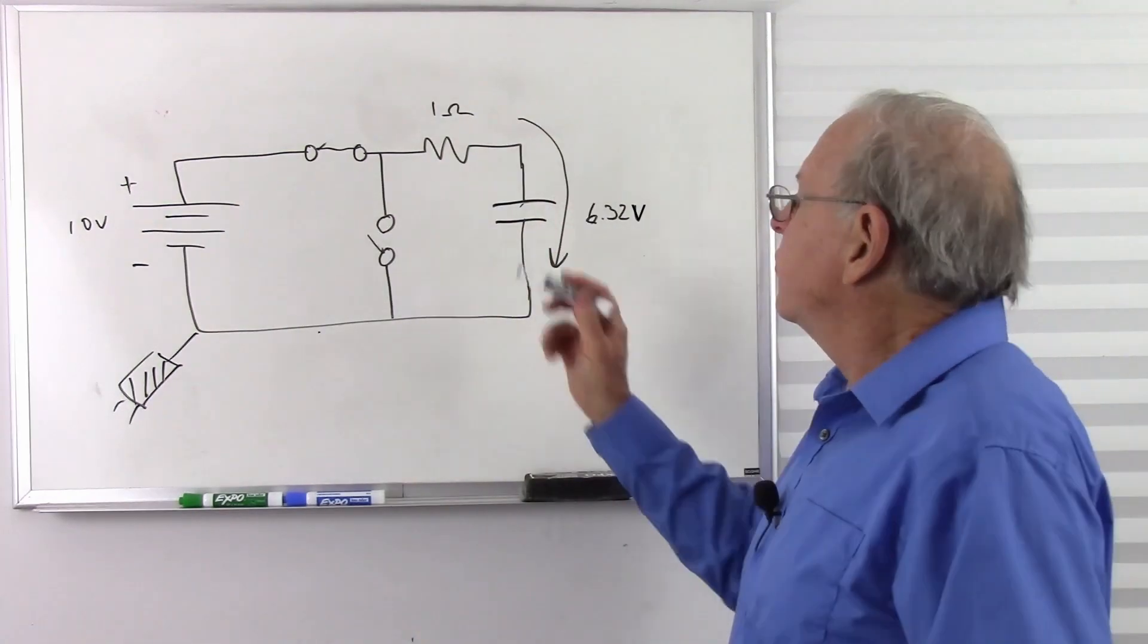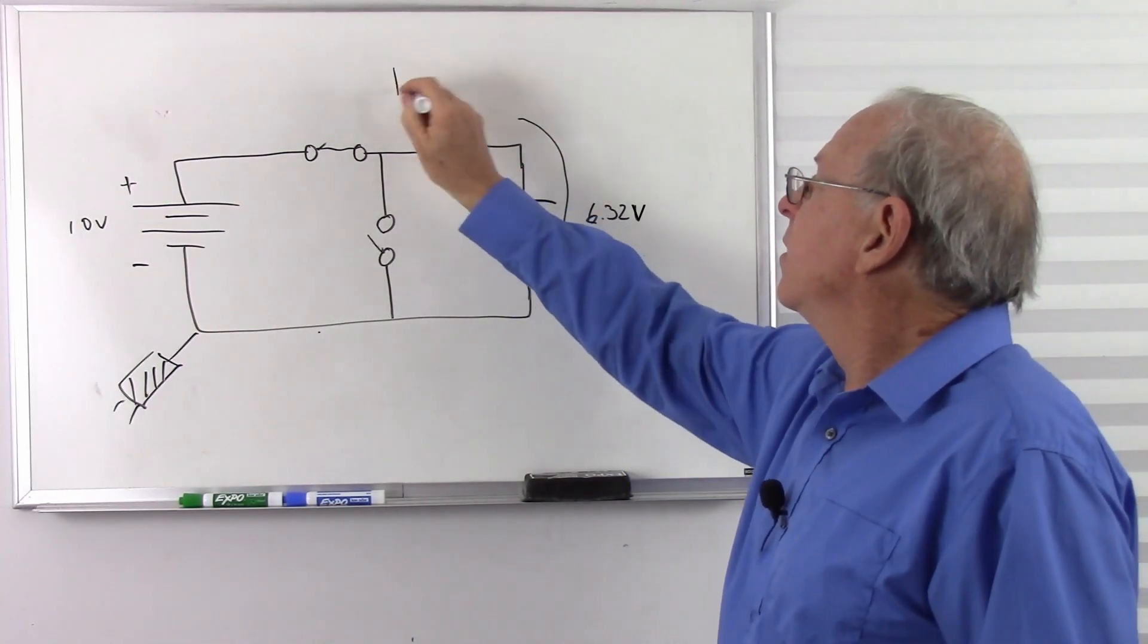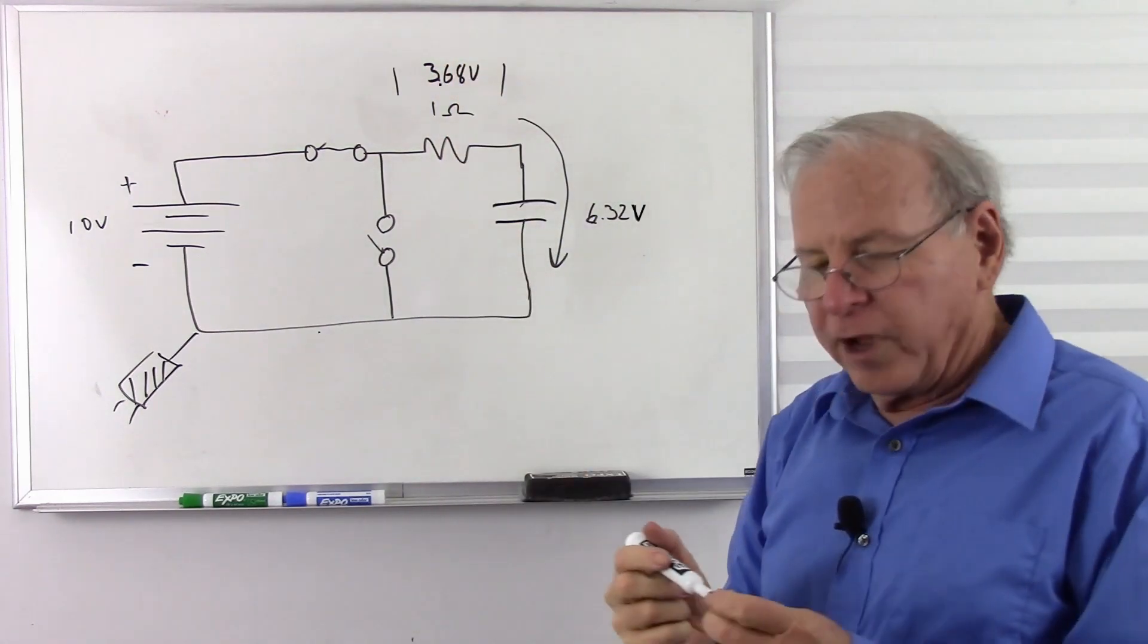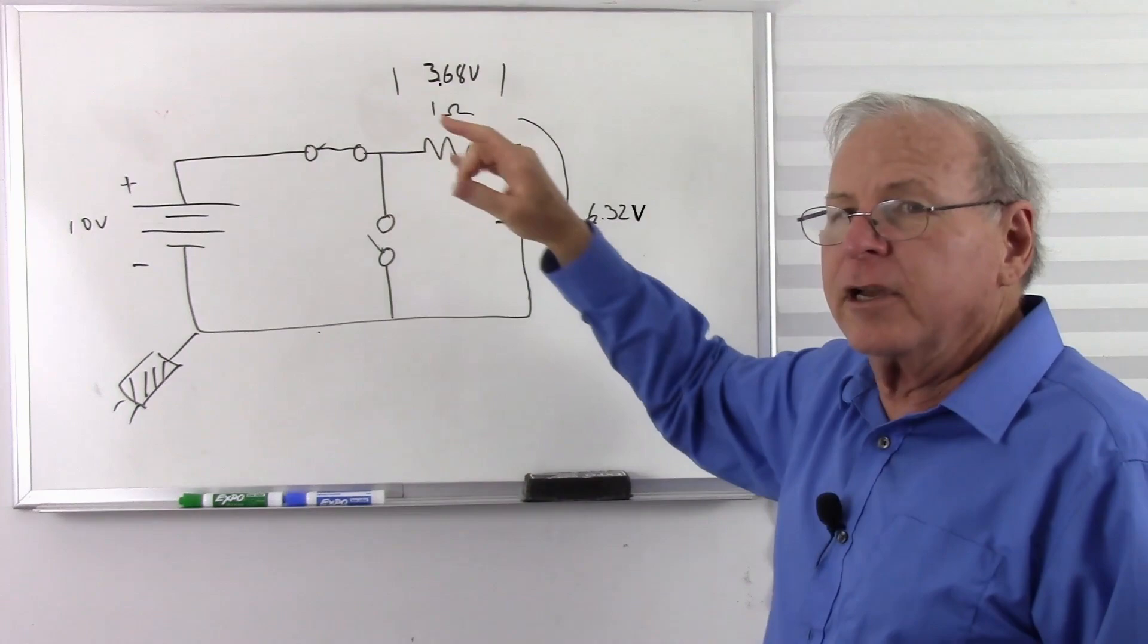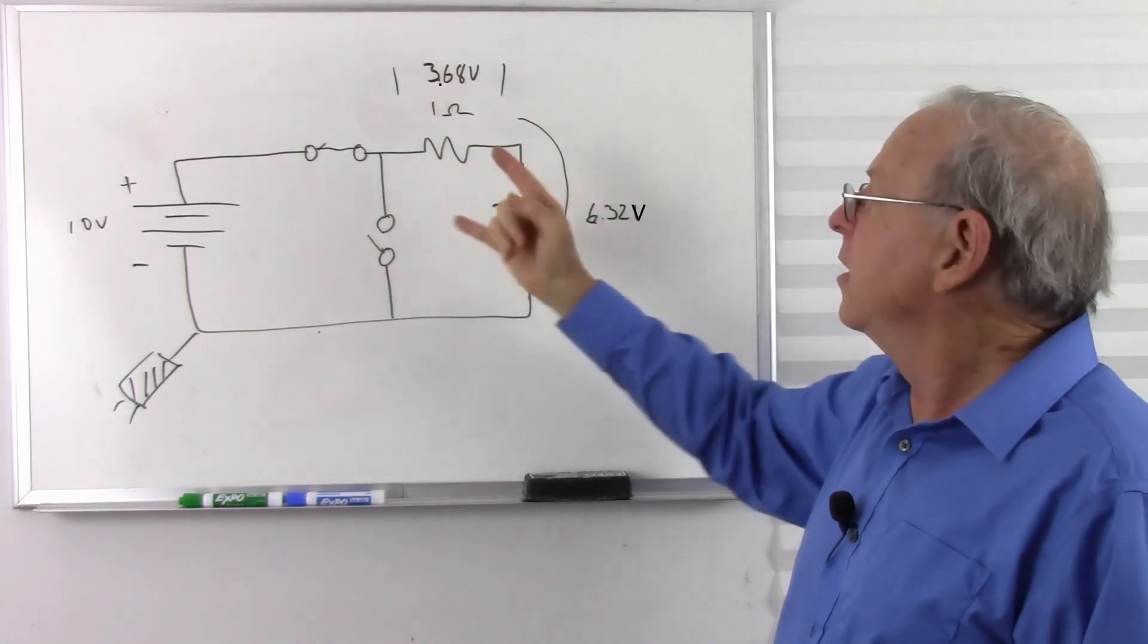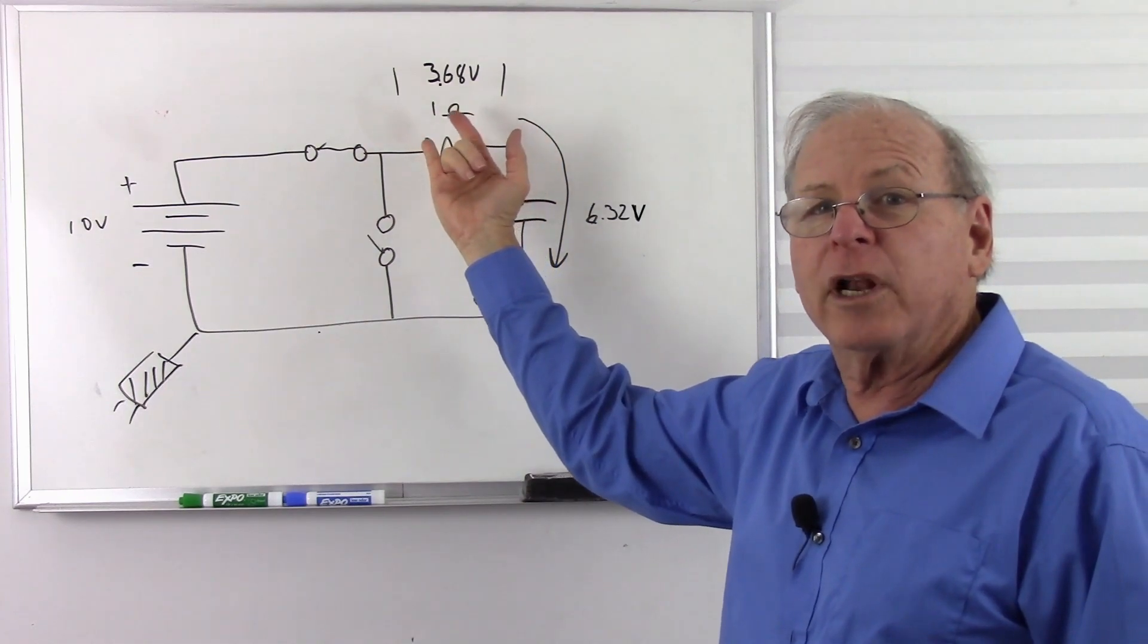Otherwise, it wouldn't balance out. So I have how much voltage here? 3.68 volts. Whatever's not here must be there. So as this charges and this voltage gets higher and higher, this voltage must be getting lower and lower, isn't it?